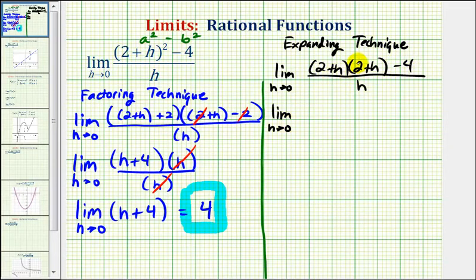Now we'll go ahead and multiply these two binomials. So we'll have four products: one, two, three, and four. So two times two is four. Two times h is two h, and then h times two is another two h. So we have plus four h, plus h times h, or plus h squared, minus four, all over h.